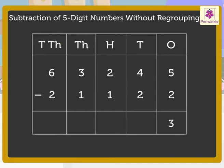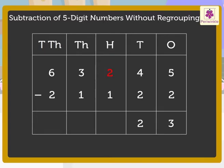Next, subtract the numbers in the tens column. That is, 2 from 4. We get 2, which we write in the tens column. Subtract the numbers in the hundreds column. That is, 1 from 2. We get 1, which we write in the hundreds column.